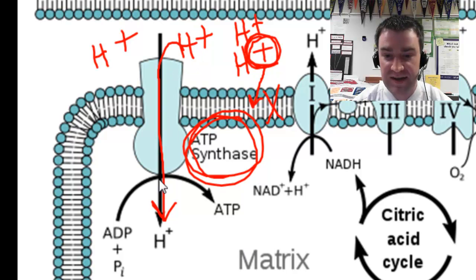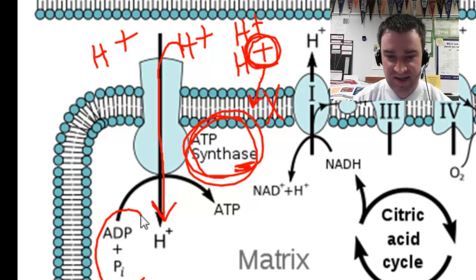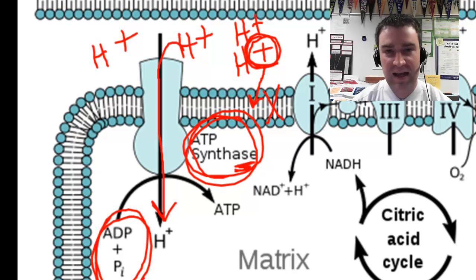So we're forcing them through ATP synthase and it's sort of a half transport protein half enzyme because while the H+ ions are traveling through it, it's that itself that is powering the synthesis of ADP and a third phosphate to make ATP.